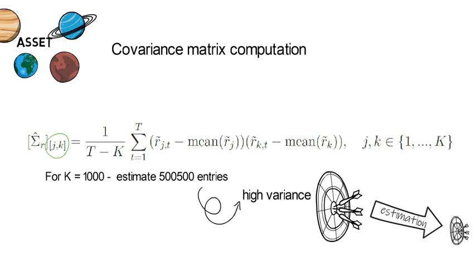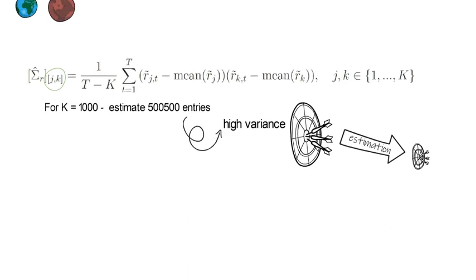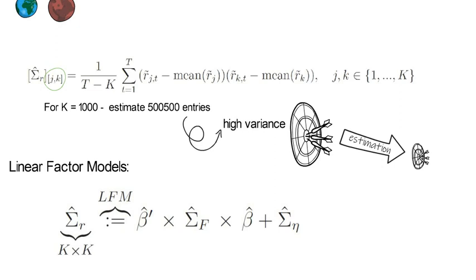Now on the other hand, if you use linear factor models to calculate the covariance matrix of returns, you will have to estimate sufficiently less parameters. So let's have a look what the estimate of the covariance matrix looks like for the linear factor model. It consists of two components. One is the beta transpose sigma f beta and the other one is the sigma eta.